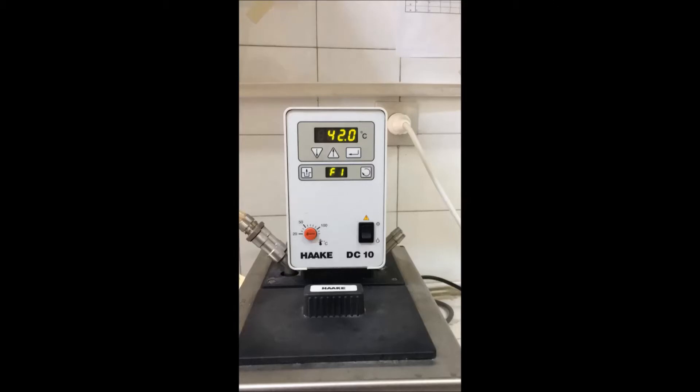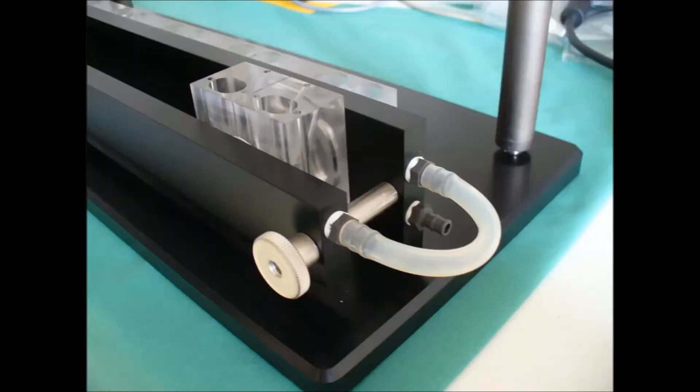We adjust the thermoregulator at the water bath to about 42 degrees Celsius because it will lose warmth within the heat conduction tubes.